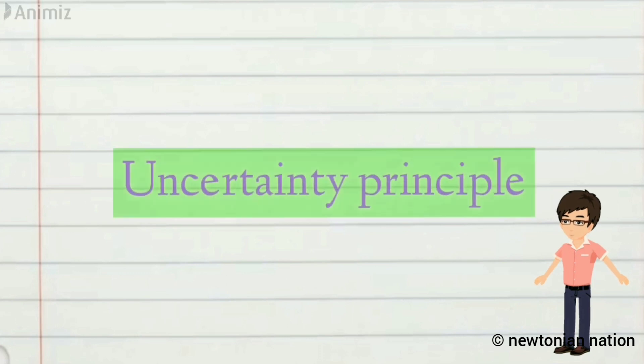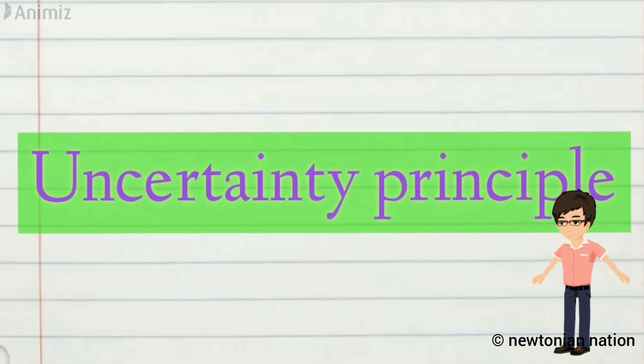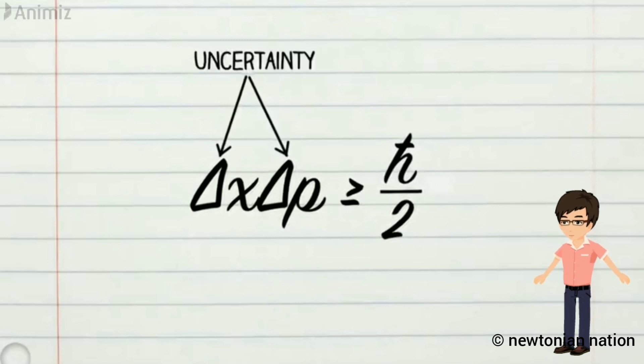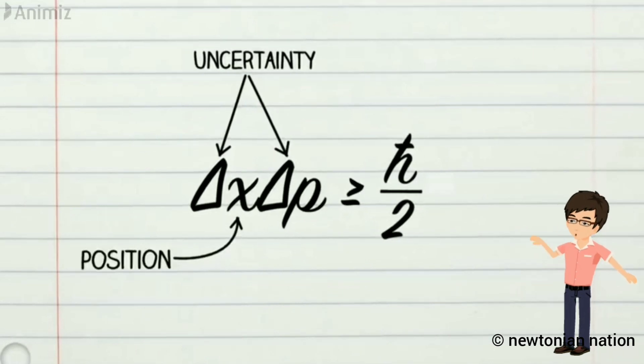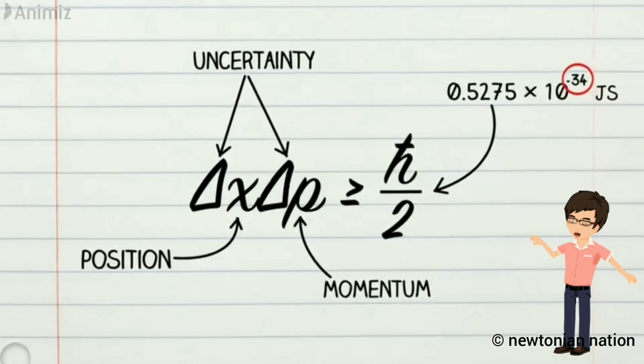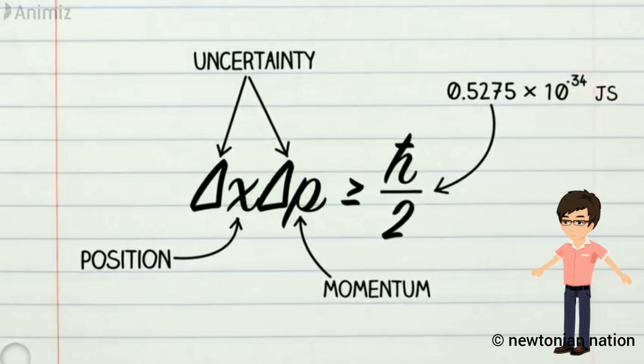So, he gave a principle called Heisenberg uncertainty principle. Here, the delta represents the uncertainty and x is the position and p is the momentum. The uncertainty in position and uncertainty in momentum are always greater than or equal to the constant here. Where the constant is very low but it is greater than zero.